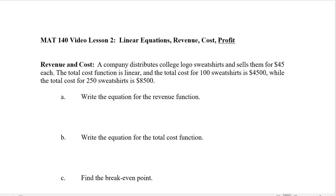The question says: revenue and cost — a company distributes college logo sweatshirts and sells them for $45 each. The total cost function is linear, and the total cost for 100 sweatshirts is $4,500, while the total cost for 250 sweatshirts is $8,500.